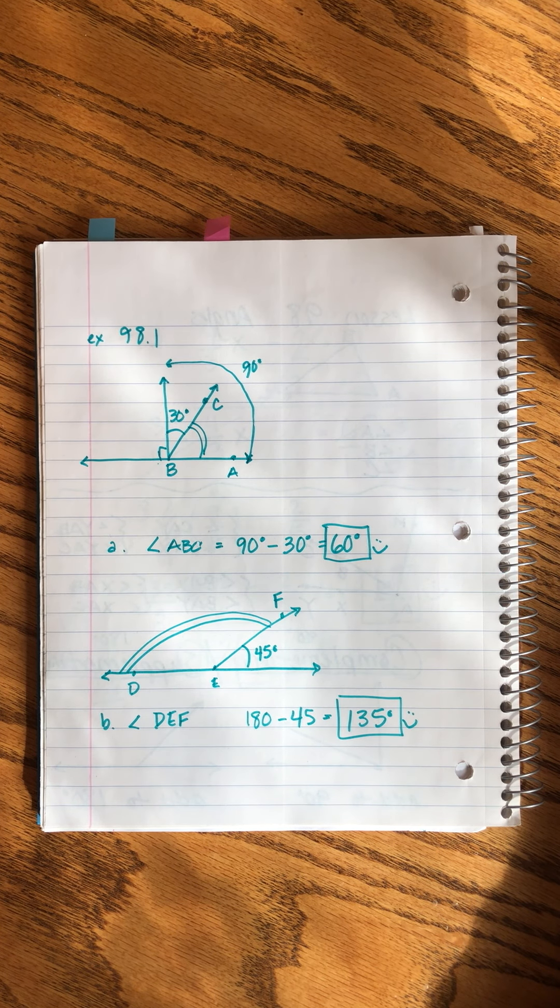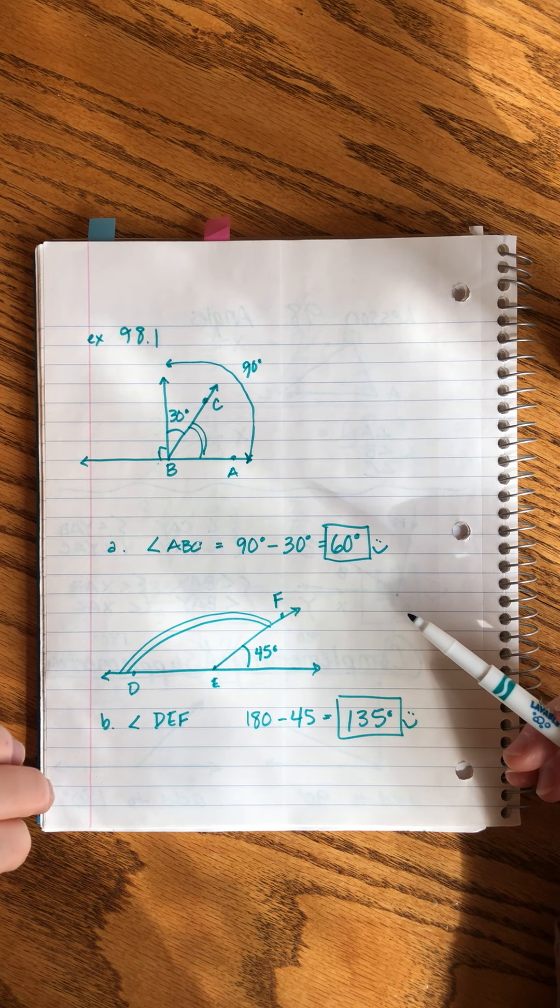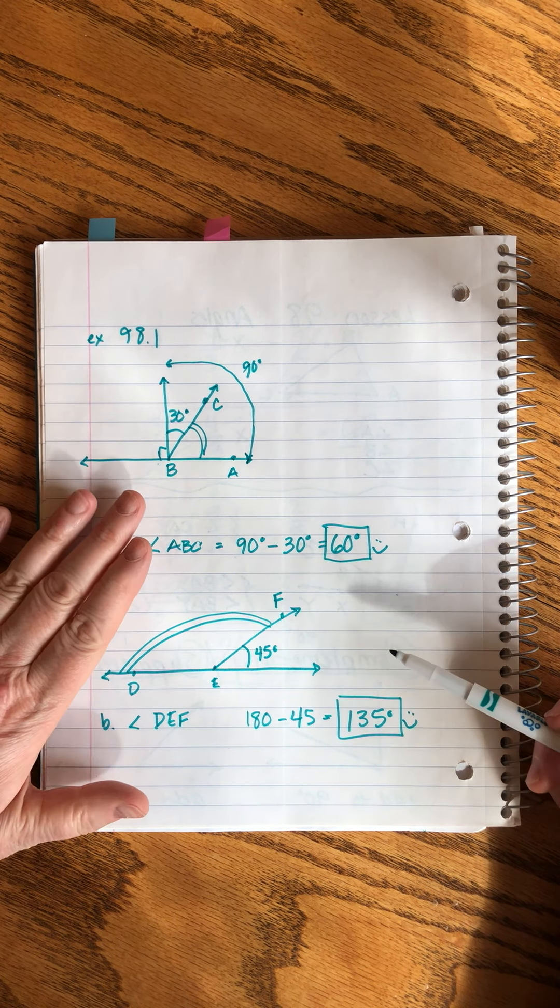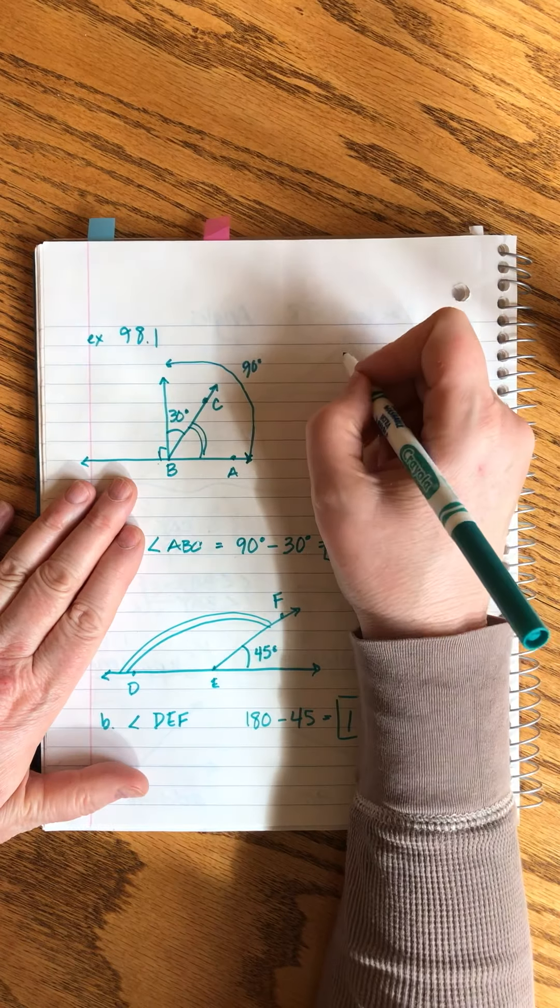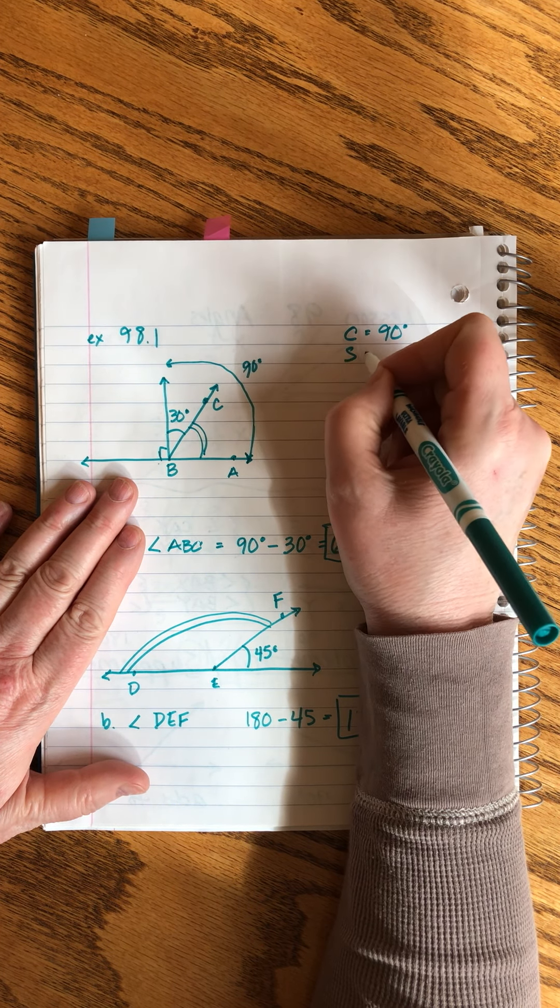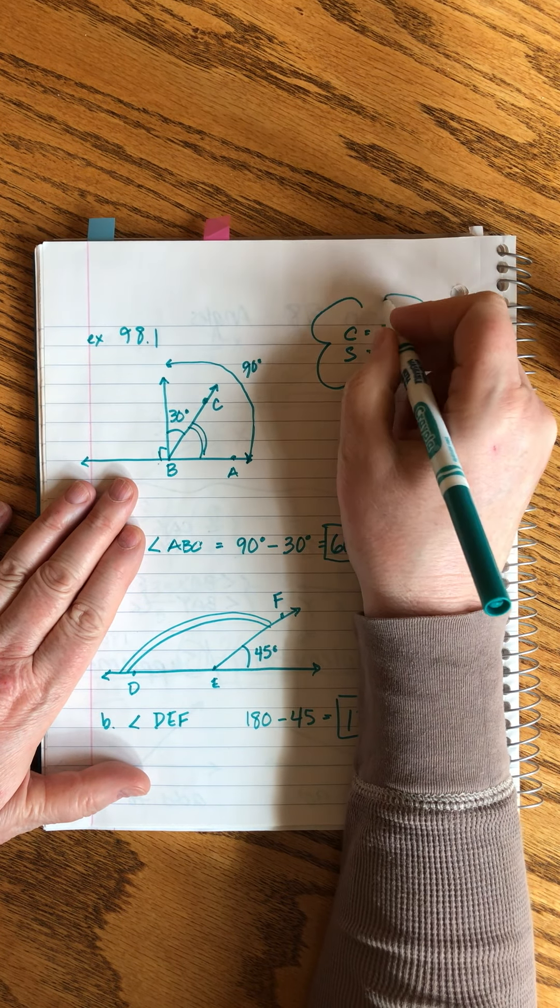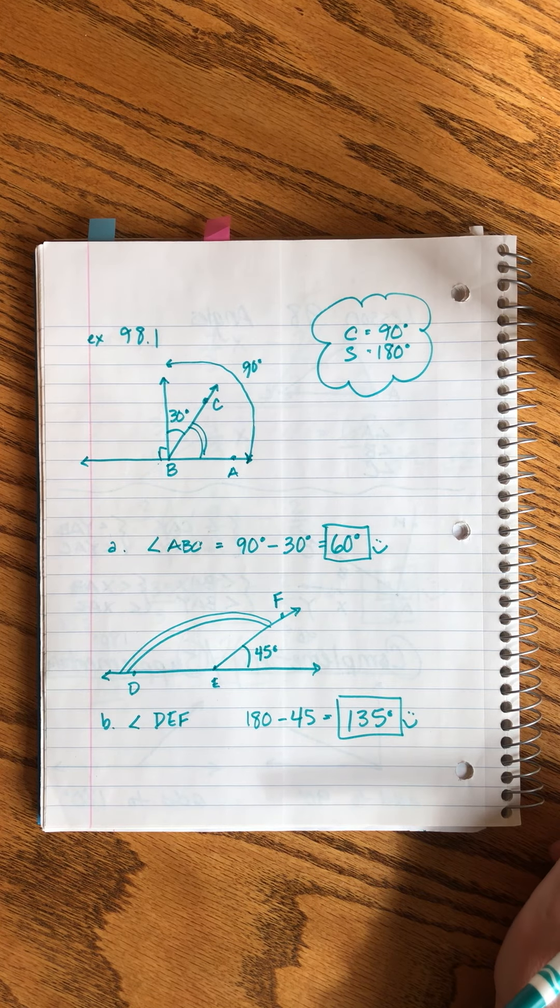So, that is the way we use the concept of complementary and supplementary angles in algebra problems to solve. Remember that complementary are the 90 degrees, supplementary are the 180. That's the hardest part of all of this.